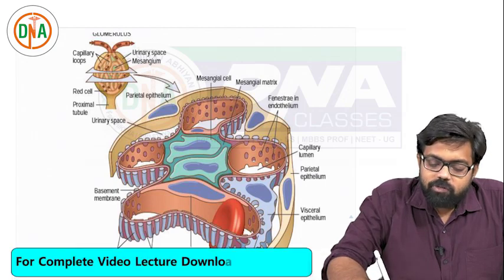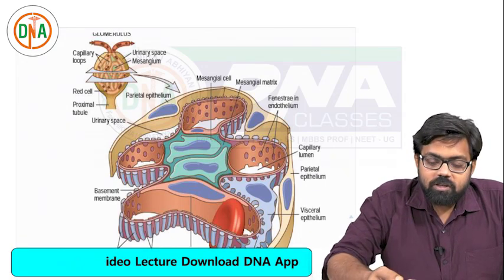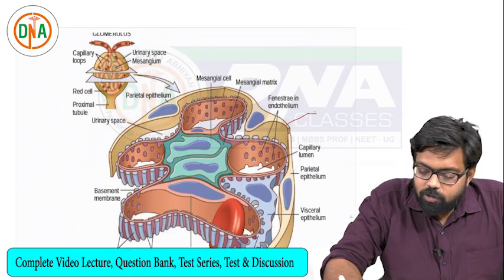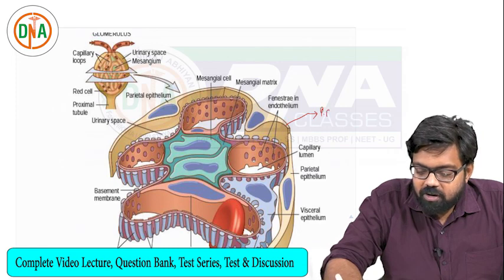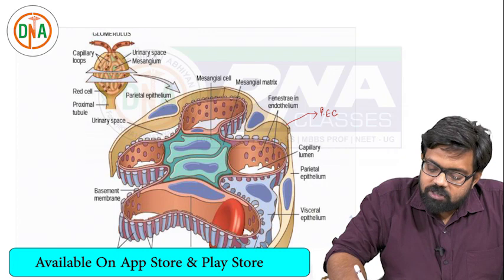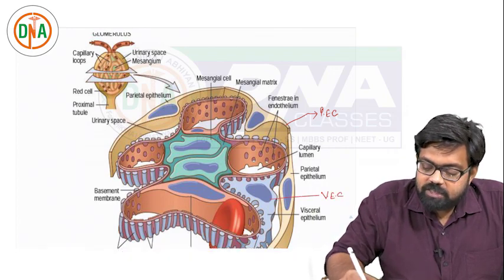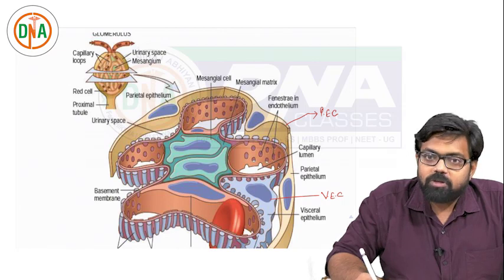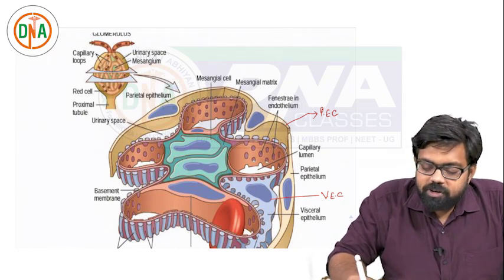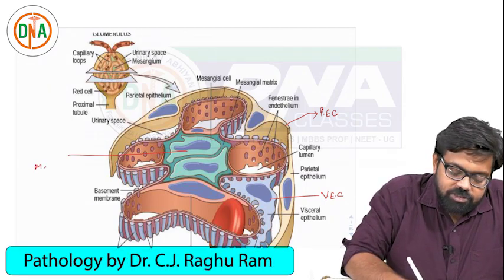This is the normal light microscopic appearance of the normal glomerulus. These outermost cells which are yellow in color are nothing but the parietal epithelial cells. And these blue colored cells are nothing but the visceral epithelial cells. For understanding purposes, food processes are shown here, but normally on light microscopy you couldn't appreciate these things. And these green colored cells are nothing but the mesangial cells.